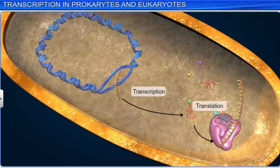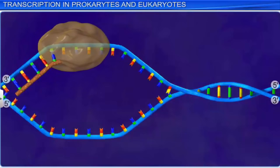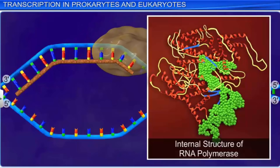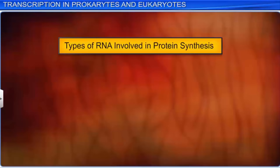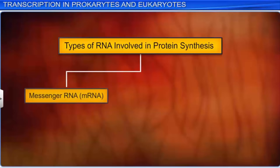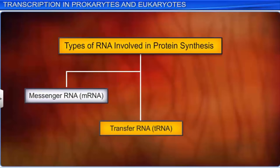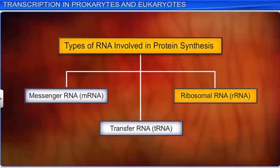The prokaryotic cell does not have separations in terms of cytoplasm and nucleus. Therefore, both transcription and translation processes involved in protein synthesis can take place inside the prokaryotic cell at the same time. In prokaryotes such as bacteria, only one DNA-dependent RNA polymerase enzyme catalyzes the transcription of all types of RNA. There are three types of RNAs involved in the process of protein synthesis: messenger RNA or mRNA, transfer RNA or tRNA, and ribosomal RNA or rRNA.